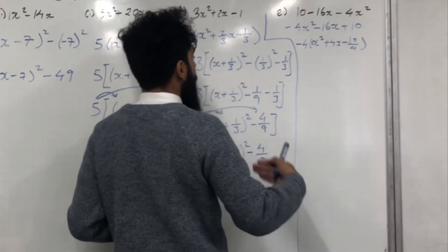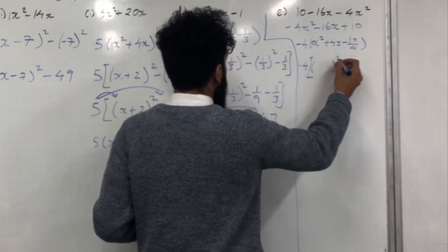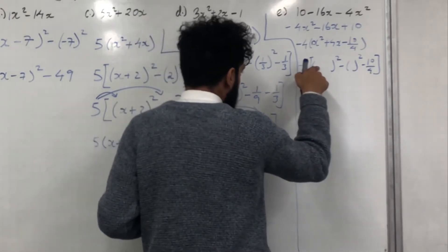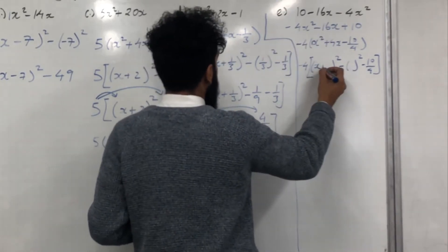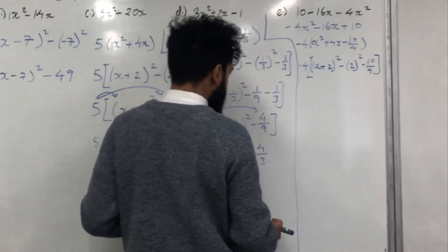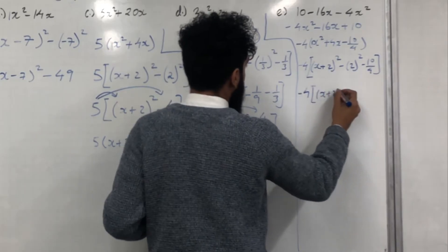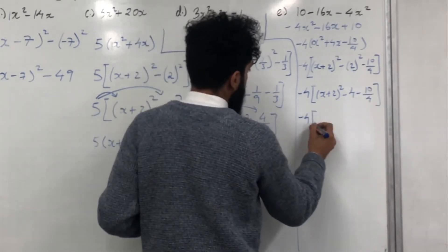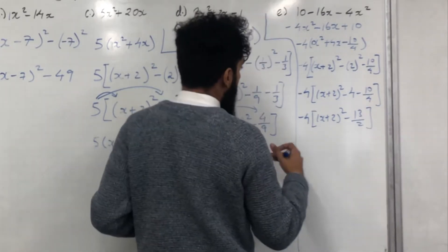We write −4 with a square bracket, then bracket squared, minus bracket squared, minus 10/4, then close the square bracket. Sticking in x and taking the coefficient of x inside the bracket, which is 4, we half it giving positive 2. So we put positive 2 in both places. Cleaning up: −4[(x + 2)² − 4 − 10/4]. Simplifying the constants gives −13/2, so we have −4[(x + 2)² − 13/2].